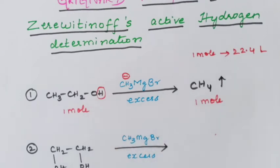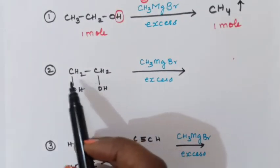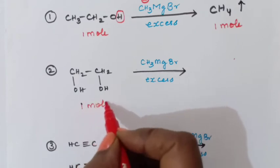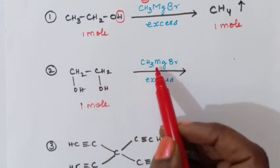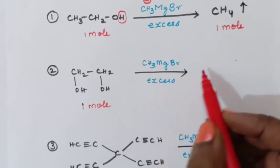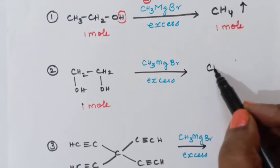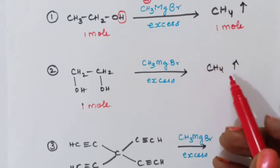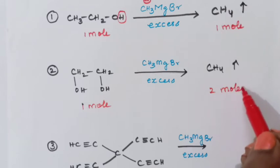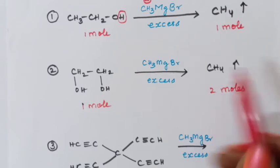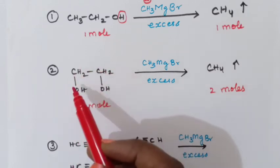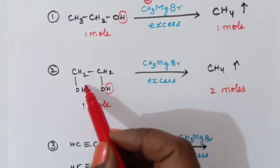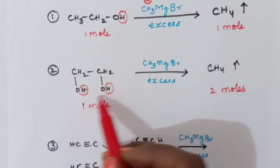Let's check with a second example: glycol. Take one mole of glycol and treat with methyl magnesium bromide taken in excess. The product will again be methane gas. Check the number of moles evolved — here two moles will be evolved. If two moles are evolved, the conclusion is that two acidic hydrogens are present. You can see one acidic hydrogen and another acidic hydrogen, so totally two acidic hydrogens are present.